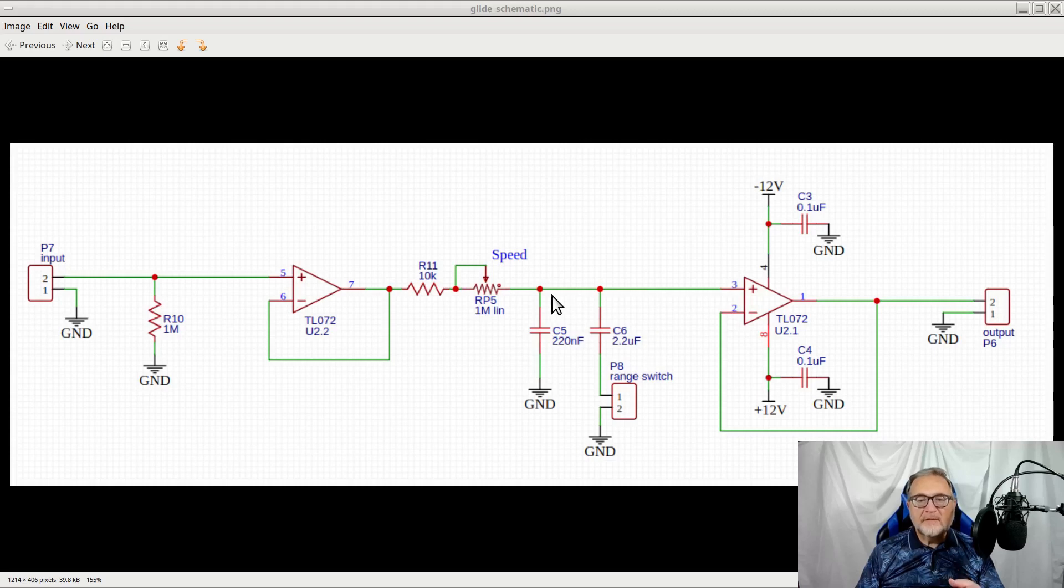The signal on top of C5 and C6 is injected into another op-amp, also in a voltage follower configuration. This way, its high input impedance does not interfere with the charge and discharge cycles of the capacitors.